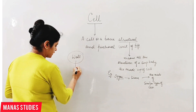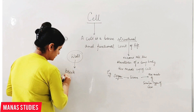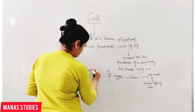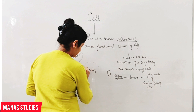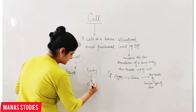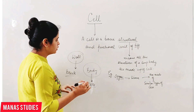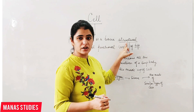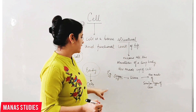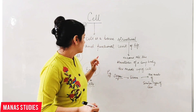I can give you one more example of a wall. For construction of a wall we need a brick. Similarly, for construction of a living body we need cells. So all the structures of a living body are made up of many different types of cells.